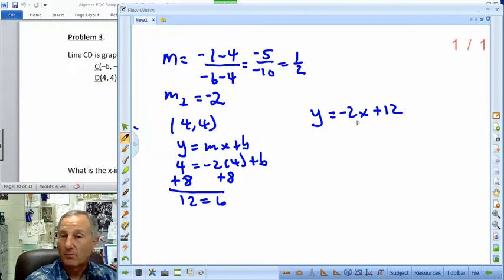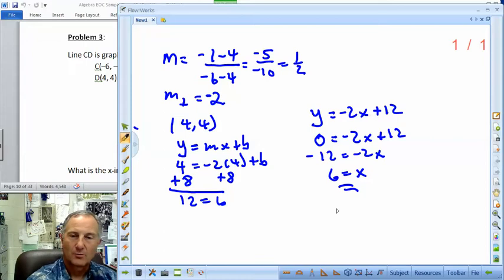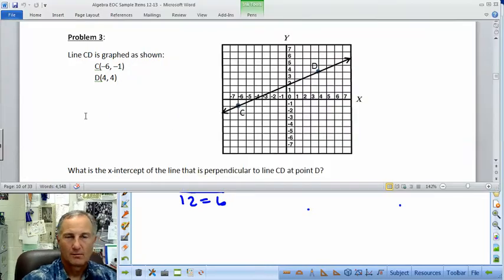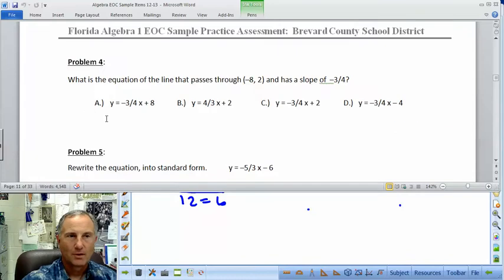Now we want the x-intercept. And remember what we talked about with x-intercept, y is 0. So I'm going to make y 0. So I'm going to get -2x plus 12. I'm going to subtract the 12 to the other side. I'm going to divide out the -2. So I get 6 is my x, my x-intercept. 6, 0, if you want to look at it that way. When you put it in the grid again, it's either 6 all the way to the left or 6 all the way to the right. And you've got that on your answer sheet.